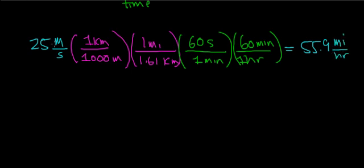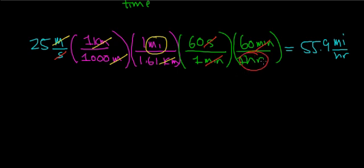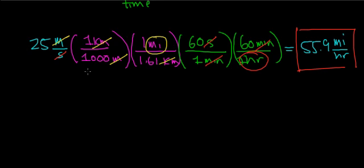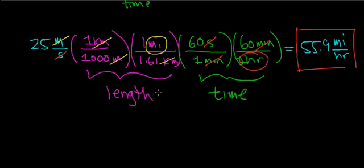To summarize: the unit of meters cancels with meters, kilometers cancels with kilometers, and the remaining unit of length is miles. For the time conversion, the unit of seconds cancels with seconds, minutes cancels with minutes, and the remaining unit of time is hours. This gives the final answer, with the length conversion and time conversion done side by side in one step.